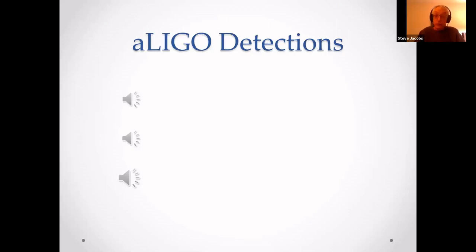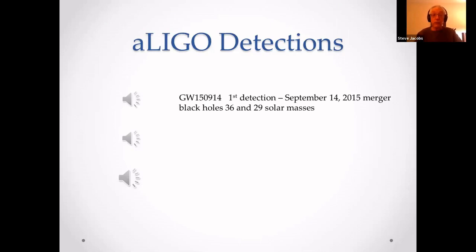Other observatories look for astronomical objects or events. LIGO listens for them. The first detection was September 14, 2015.